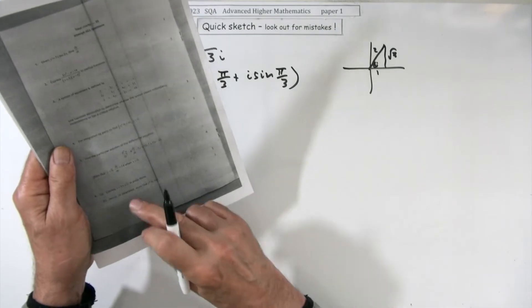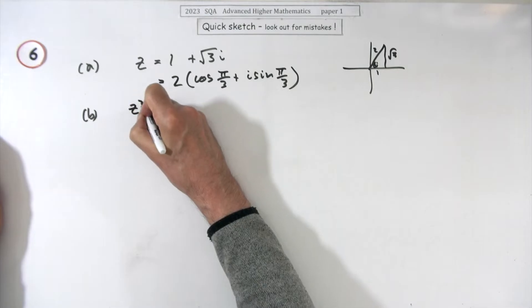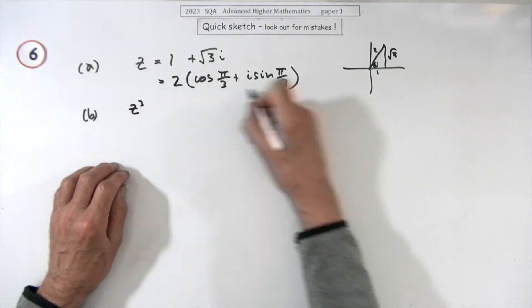Part b: hence or otherwise show that z cubed is real. I suppose the only reason for doing that was it's easier to multiply numbers in polar form.